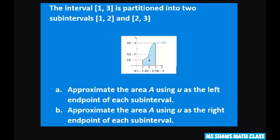So basically what that means is this is already divided into two for us, but when you look at this you have points 1, 2, and 3. So when we're partitioned into two, we're just looking at two of them. So when we're starting with the left endpoint, that means we're starting at f of 1.